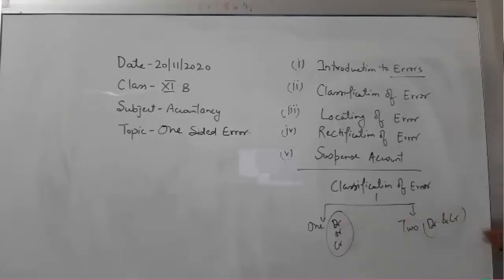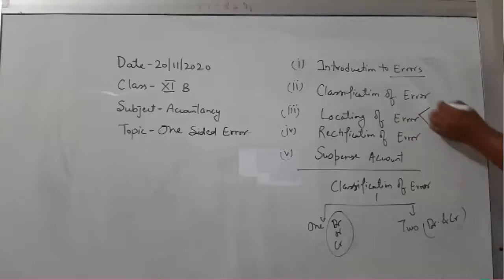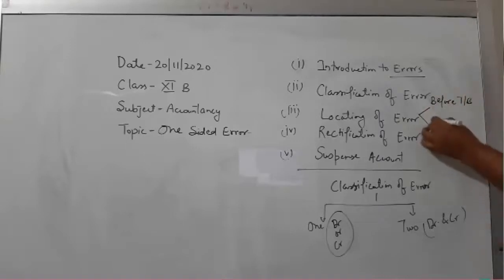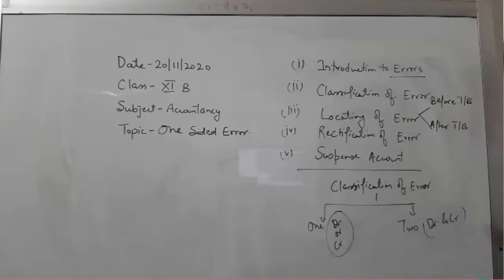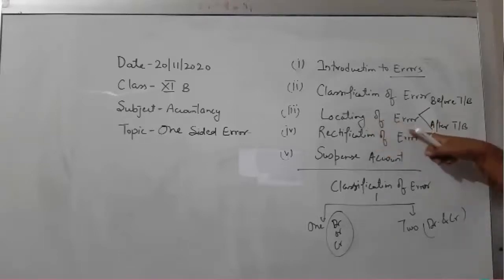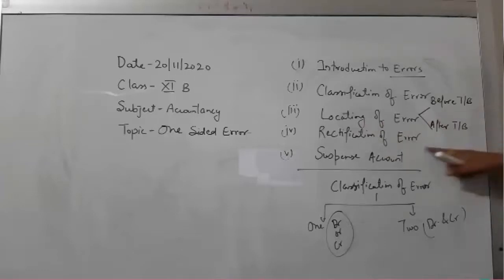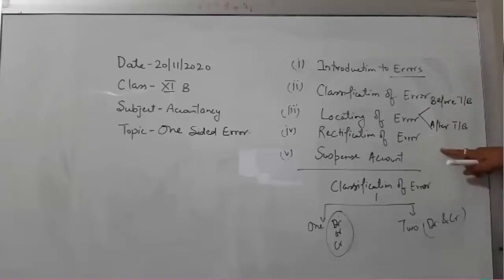The next point is locating of errors. So where are errors basically located? The first one is before the preparation of the trial balance, and the second is after the preparation of the trial balance. The rectification of error — the third stage of this chapter — is totally based on the locating of errors. If errors are located after the trial balance, and if any error is located after the trial balance, the rectification of the error will take place accordingly with the use of suspense account.